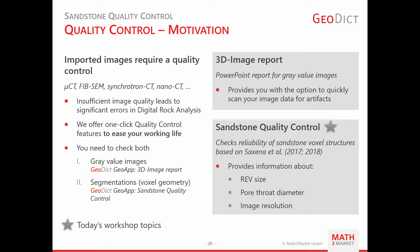To support you in your routine quality control workflow, we have implemented one-click quality control features. The GeoApps 3D image report and sandstone quality control will significantly ease your working life. The first provides a PowerPoint report for your 3D raw data, enabling you to quickly scan your 3D images for artifacts. The latter checks the reliability of your segmented sandstone geometries for determination of absolute permeability, following the approach of Saxena et al.